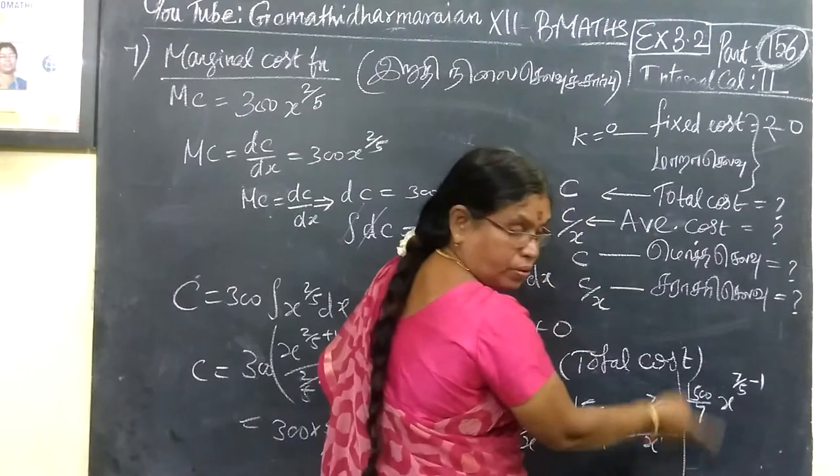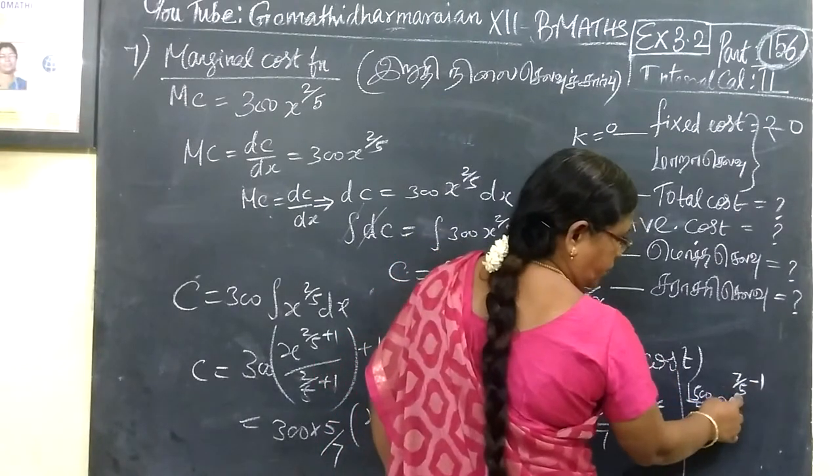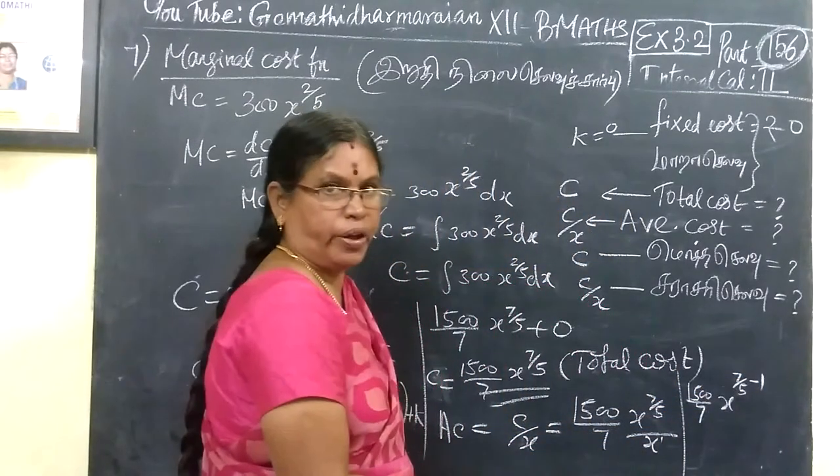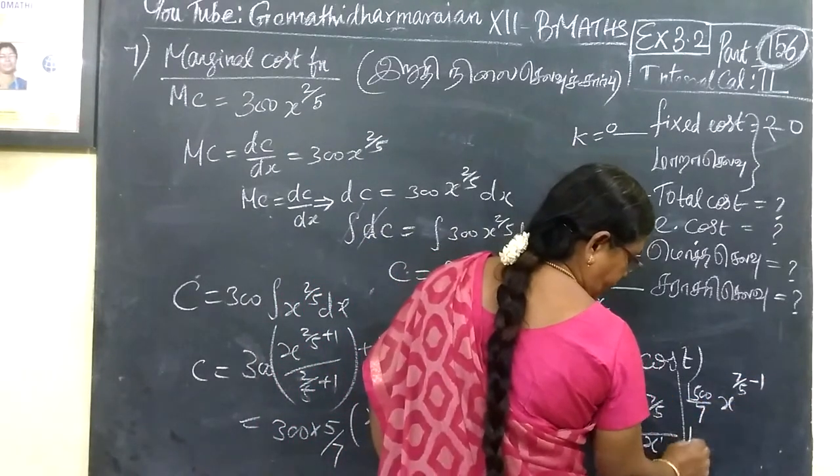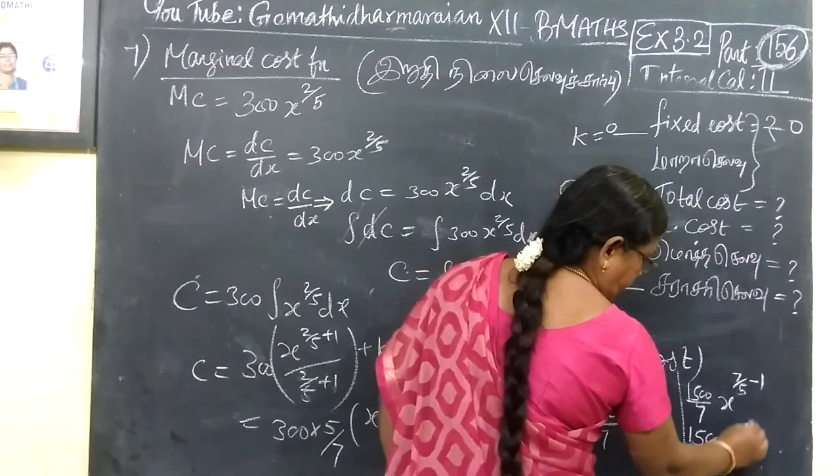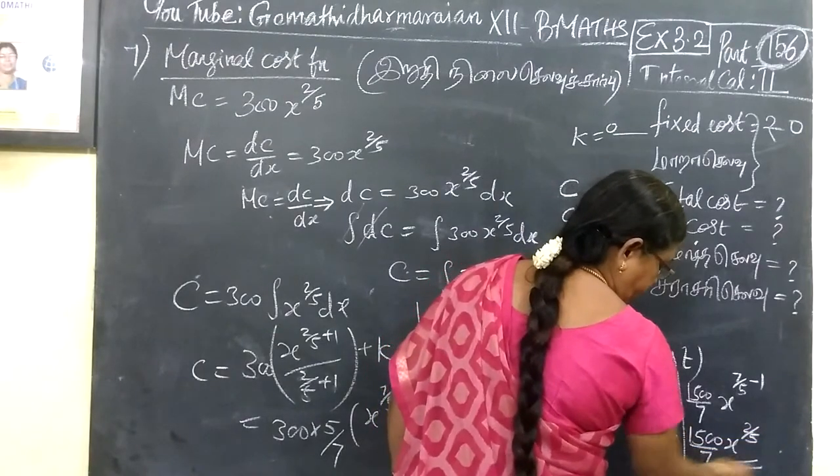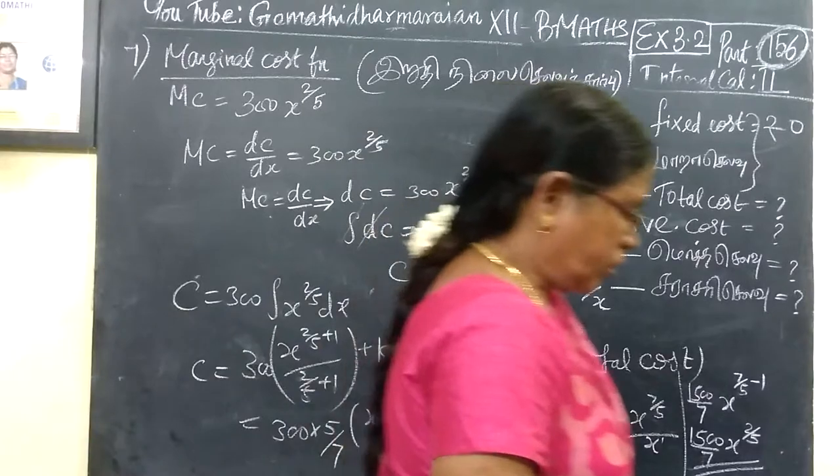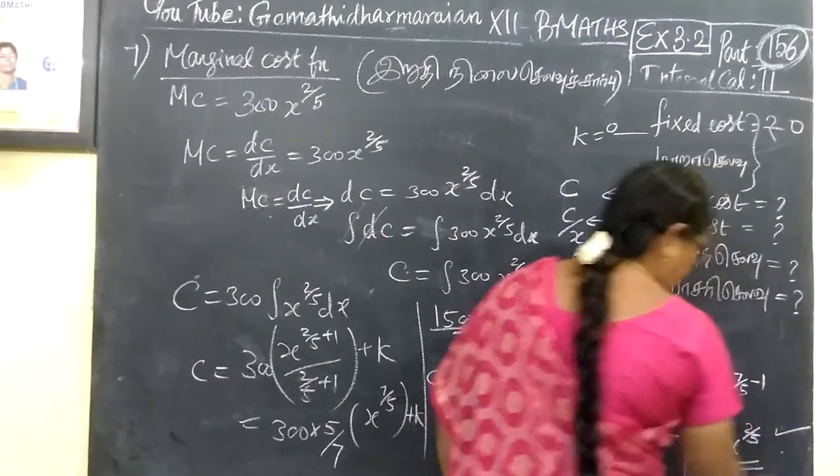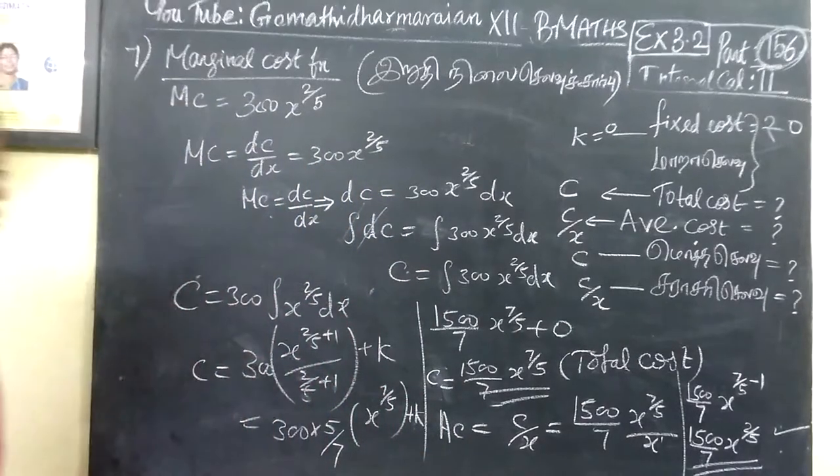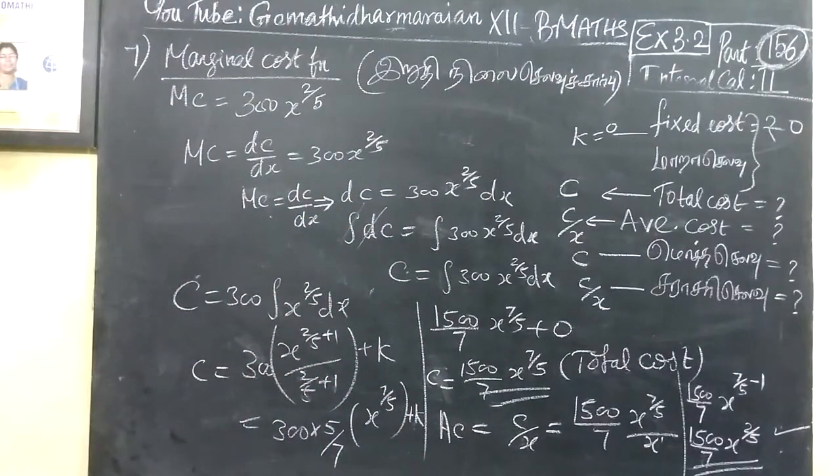We have 1500 by 7 x power 2 by 5. So, the answer for this, we have to correct it. This is the correct answer.